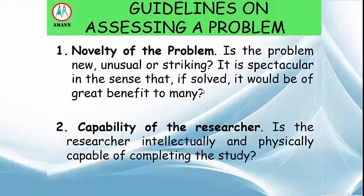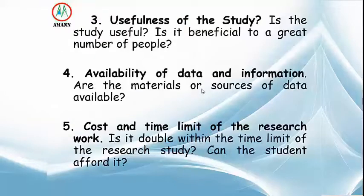Guidelines on assessing a problem include the following. Number one is nobility of the problem — is the problem new, unusual, or striking? Is it spectacular in the sense that if solved, it would be a great benefit to many? Number two is capability of the researcher — is the researcher intellectually and physically capable of completing the study? Number three is usefulness of the study — is the study useful and beneficial to a great number of people?